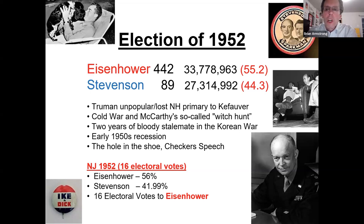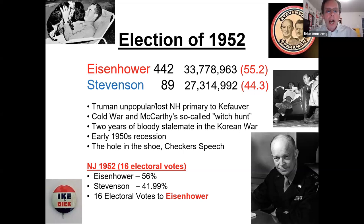The hole in the shoe — Stevenson was photographed with a hole in his shoe and said it was because he was working so hard. Eisenhower turned the tables and said it was because his candidacy was so bad. Eisenhower won 56% in New Jersey.